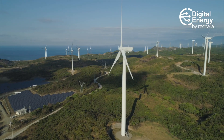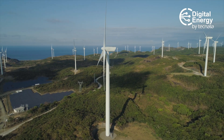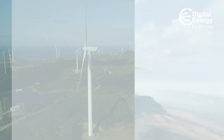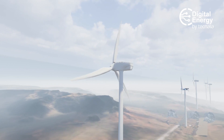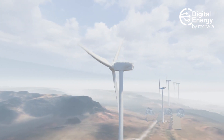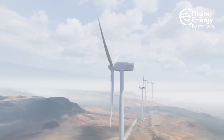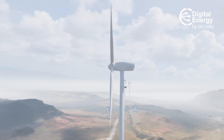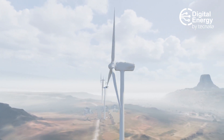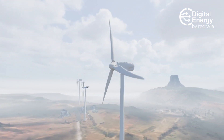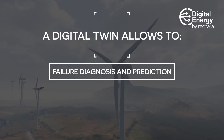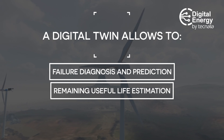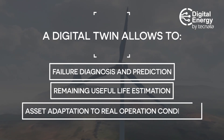A digital twin is a digital replica that simulates the behaviour of a physical asset. Real-time data from sensors is fed into the digital twin and compared to simulated theoretical parameters under the same working conditions. Then similarities and discrepancies are analysed in order to extract useful knowledge about the health of the asset. A digital twin allows to diagnose and predict failure, estimate the remaining useful life and adapt the asset to the real operating conditions.